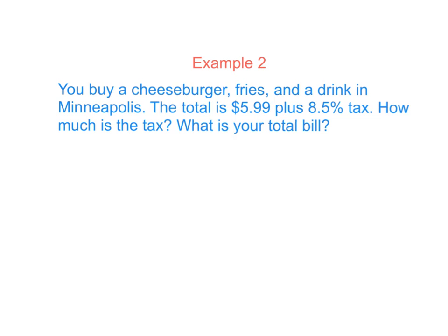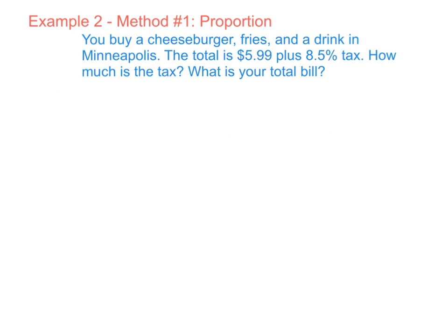Alright, here's our second example. You buy a cheeseburger, fries, and a drink in Minneapolis. The total is $5.99 plus 8.5% tax. How much is the tax? What's your total bill? Alright, first method, let's use a proportion. So we've got our total bill, our total which is $5.99 or our pre-tax total plus an 8.5% tax. So we know if it's percent, it's out of 100. So we've got our 8.5 over 100. We're solving for our x.